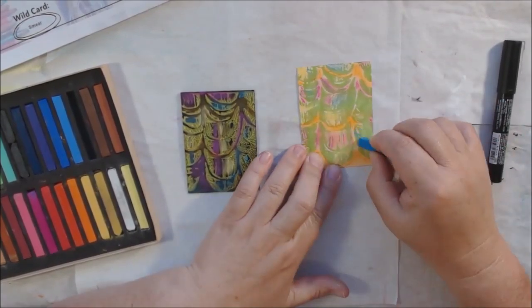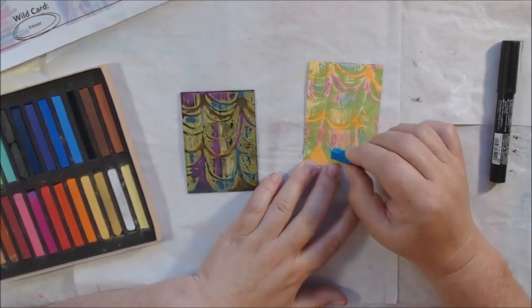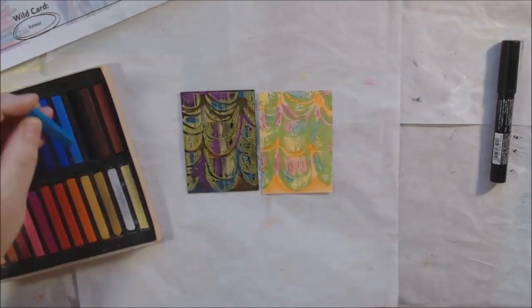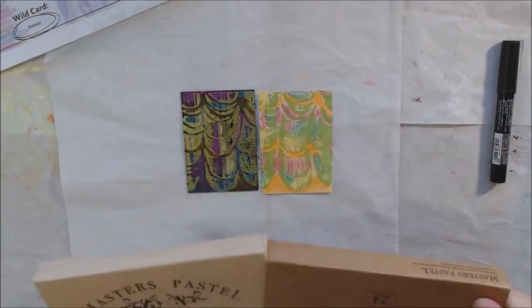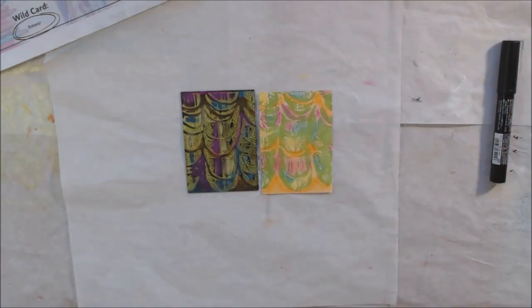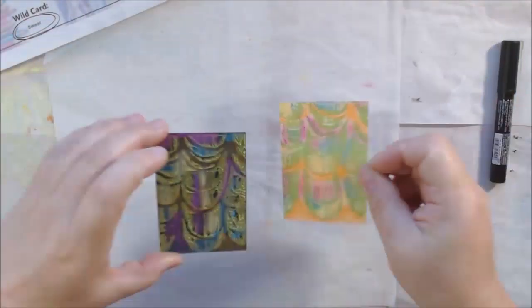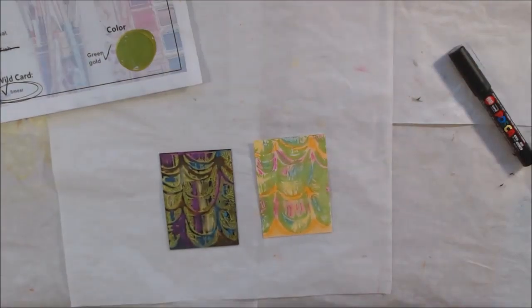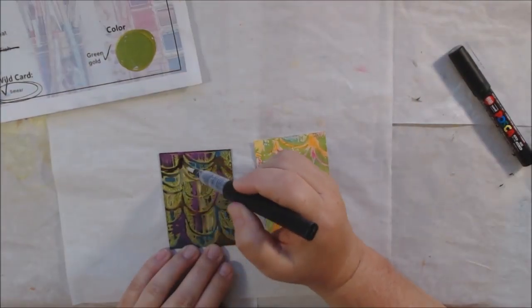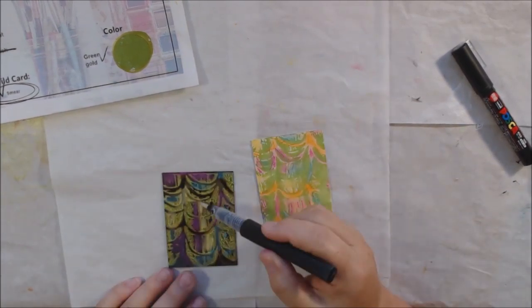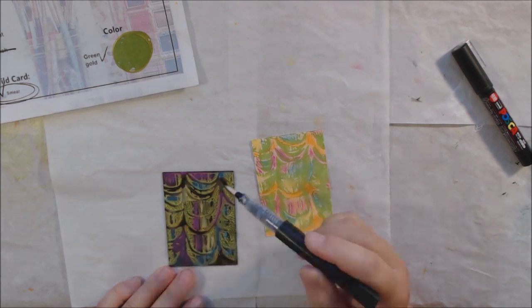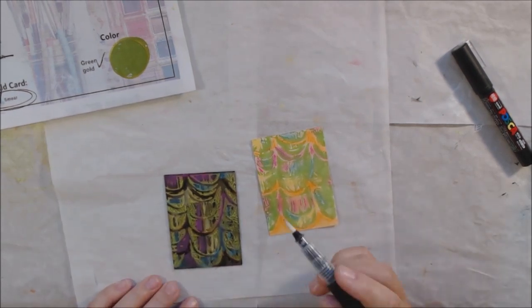I'm just putting the pastel chalk on and then smearing it with my finger, filling in the areas between the pattern just to add some more color to my cards. At this point I've used all my prompts.